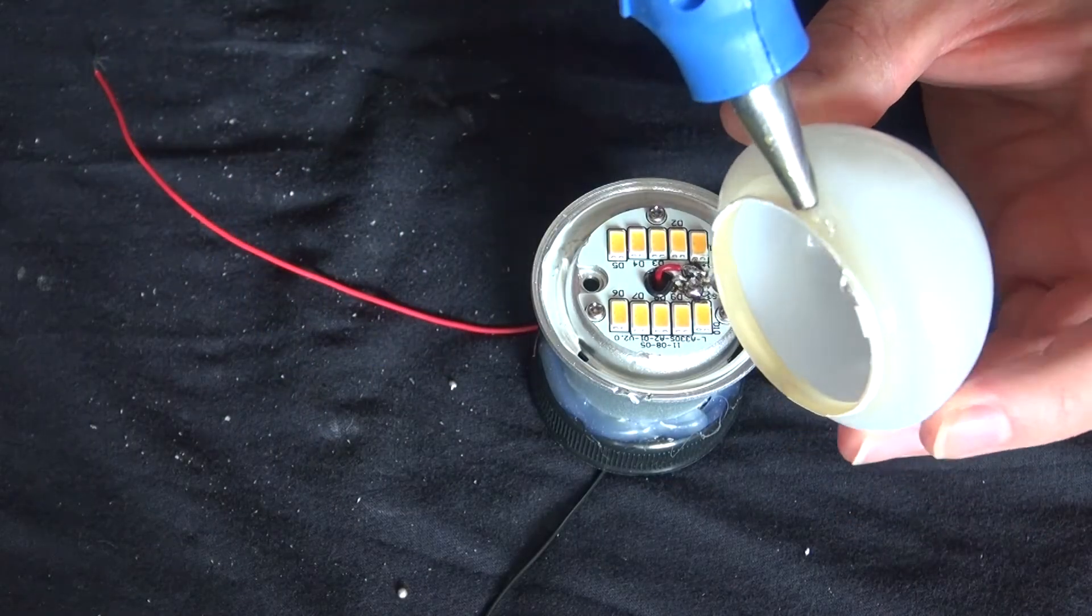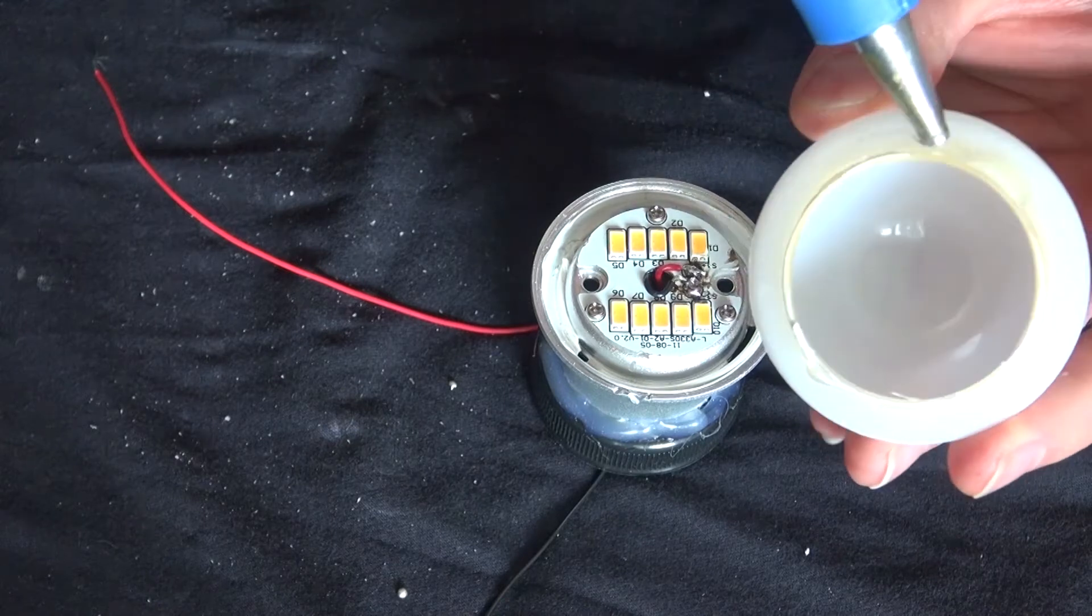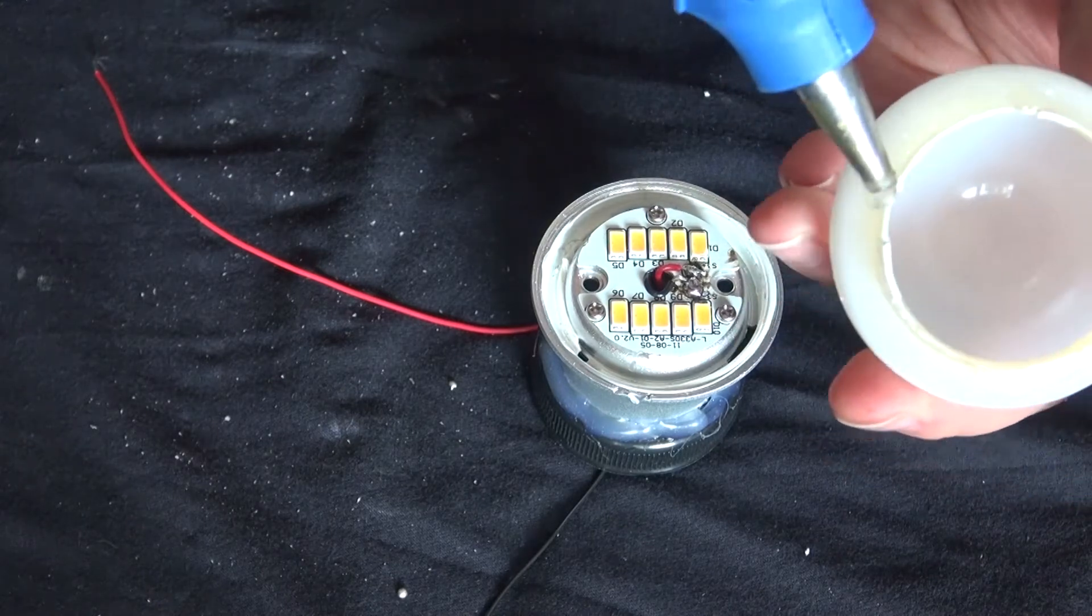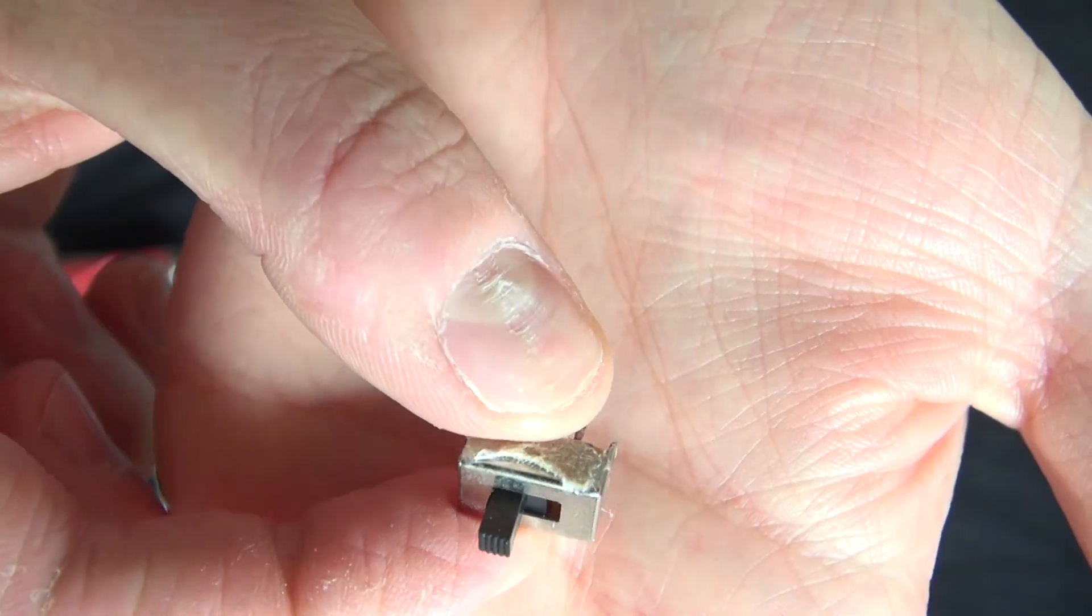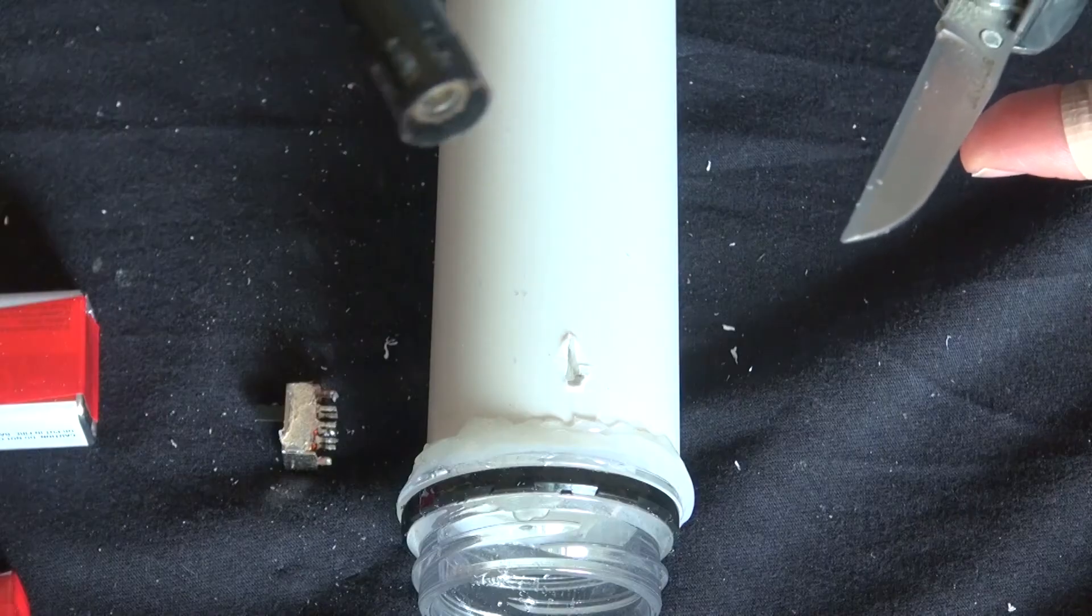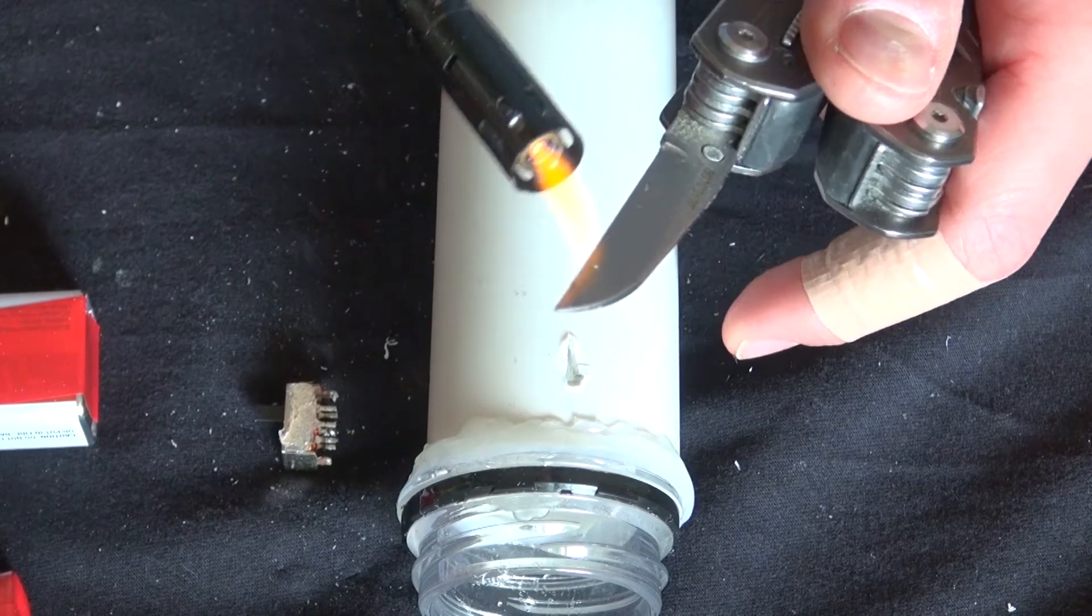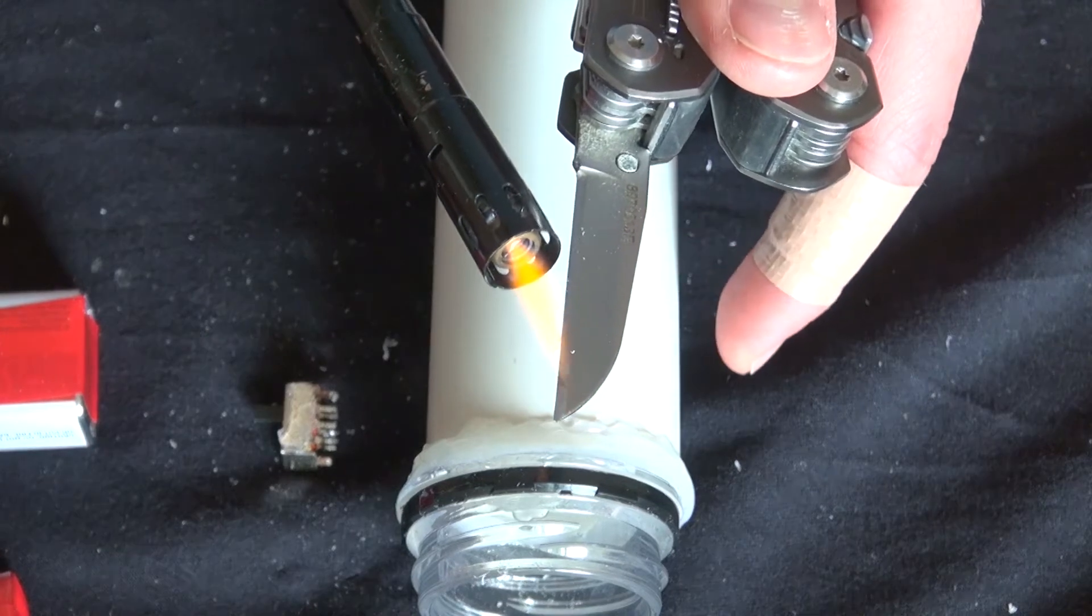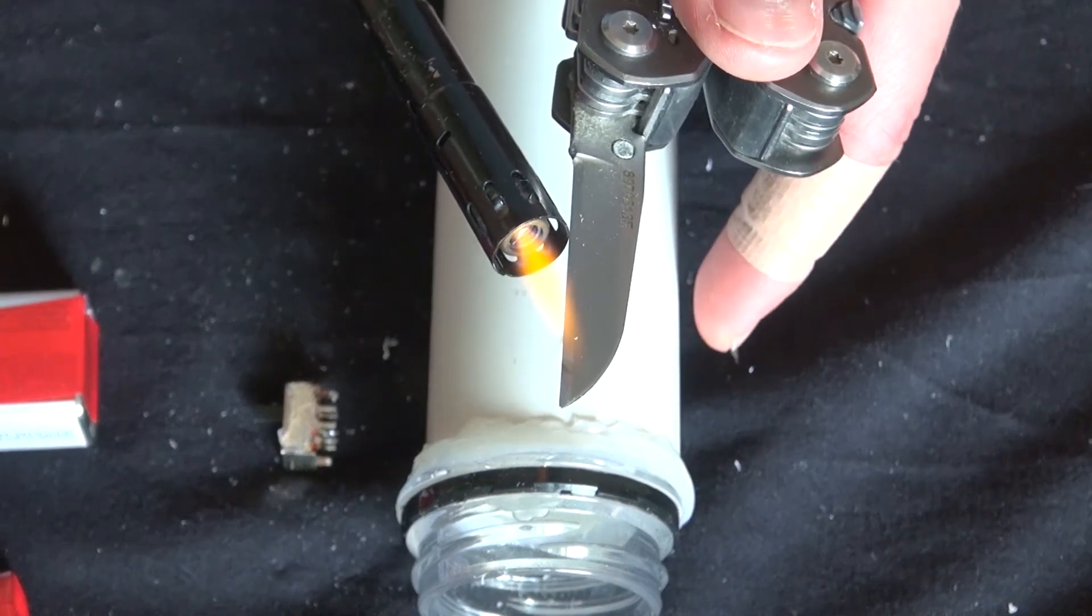There we go just like that and now you can attach these wires to the nine volt batteries. So now I'm going to go ahead and glue this cap back on and I have right here my switch. I want to place my switch right about there.